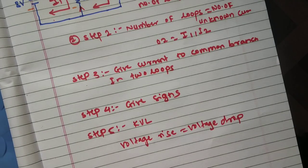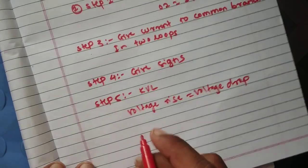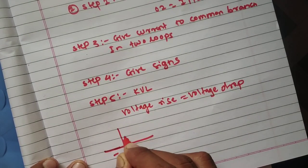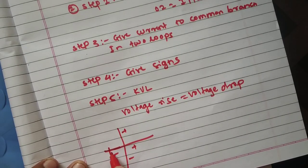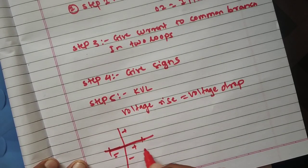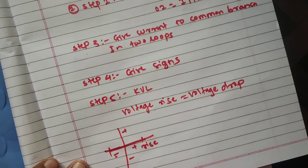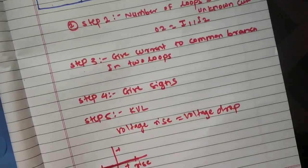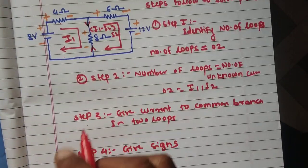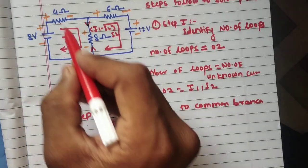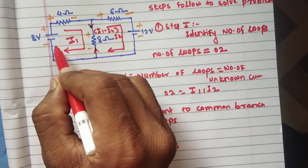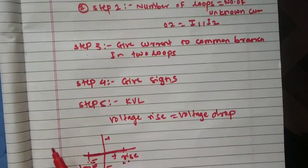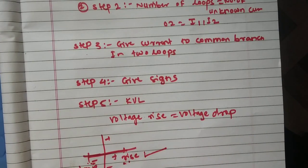Rise means going up and drop means coming down. Like a number line, when plus minus is there and you go from minus to plus, the value is rising. Plus to minus, it's dropping. Compare this with the problem, the current direction. Minus to plus is voltage rise.